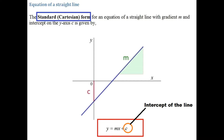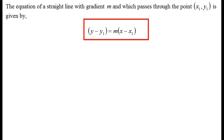The intercept is the crossing point on the y-axis. Here's a formula to work out the equation of a straight line with gradient m passing through the point (x1, y1). If you have the gradient and the point where the line passes through, you can use the formula y − y1 = m(x − x1).